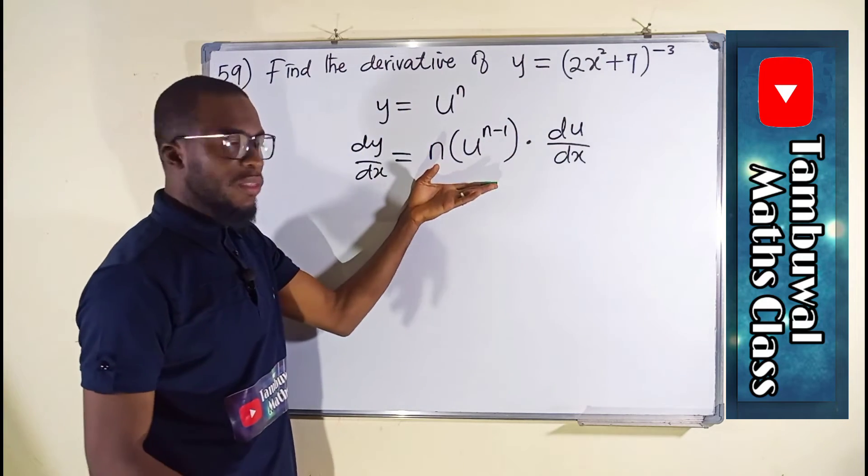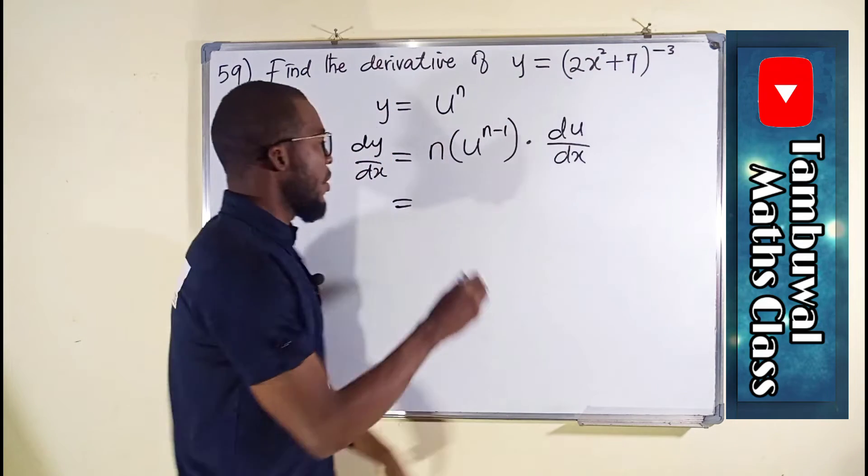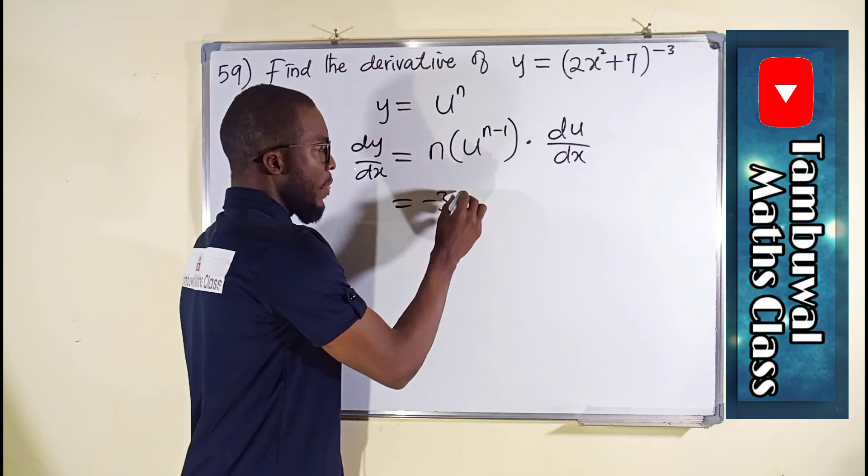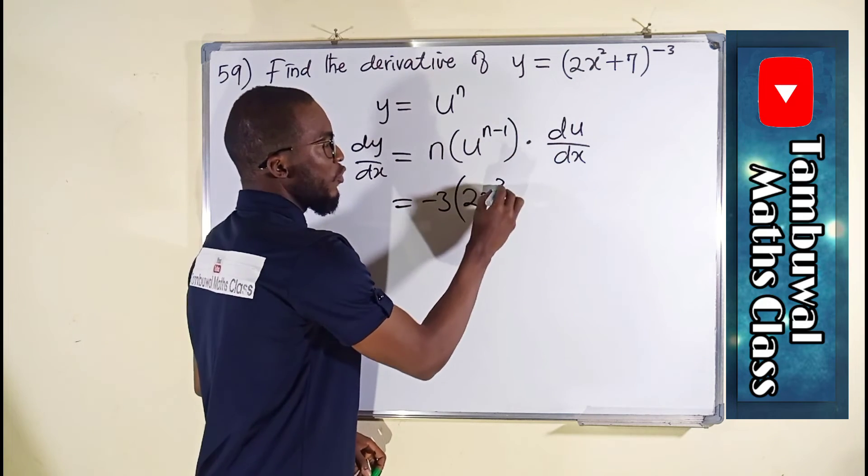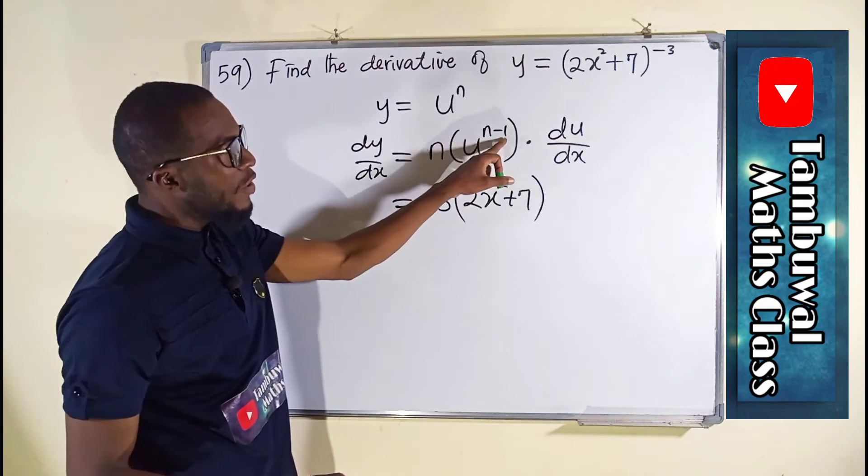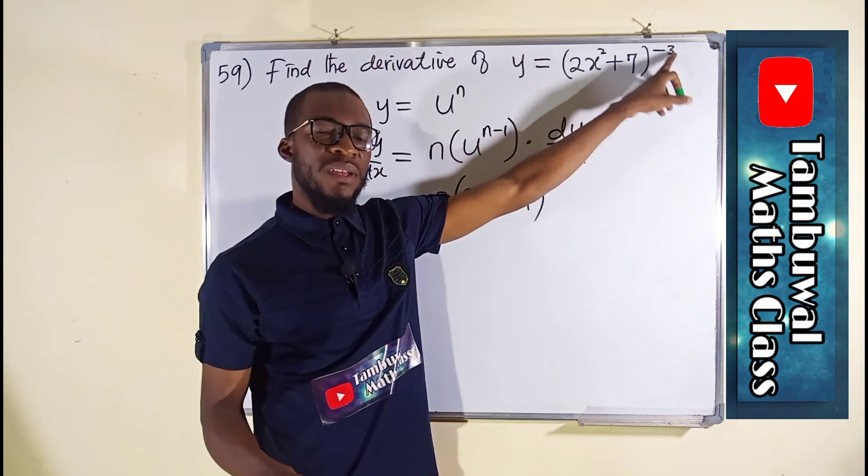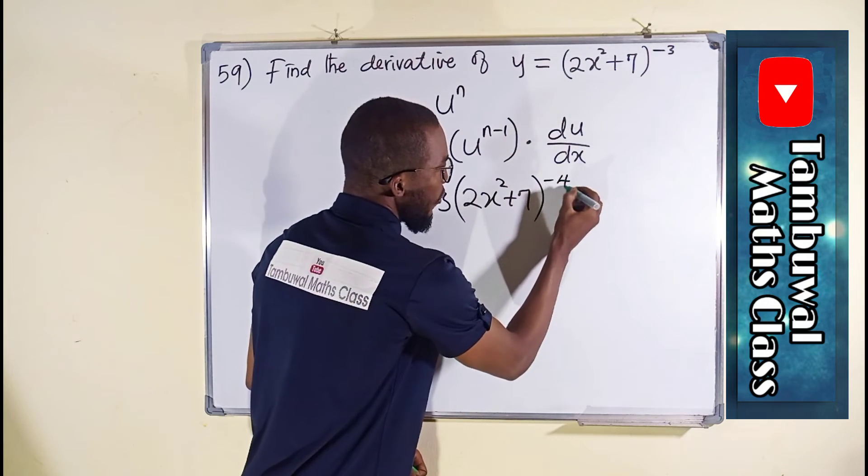So we are going to substitute them here. n is that power, we have minus 3, and our u, you see, is 2x squared plus 7, raised to the power of n minus 1. n is negative 3, minus 1 is minus 4, so we have raised to the power of minus 4.